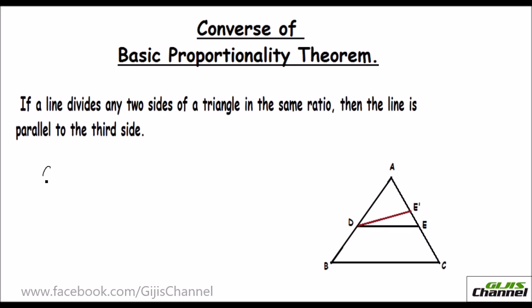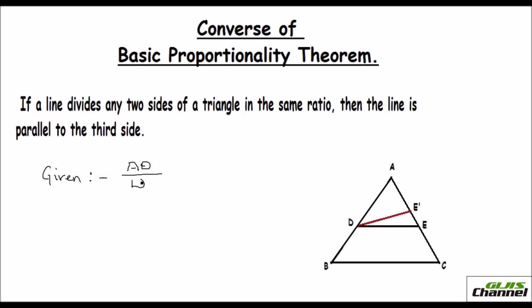What is given is that the two sides of the triangle are divided in the same ratio. I have taken triangle ABC with a line DE, where D lies on AB and E lies on AC. The ratio given is AD over DB equals AE over EC. This is what is given.